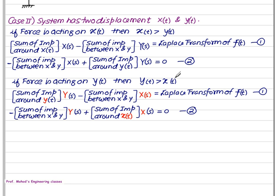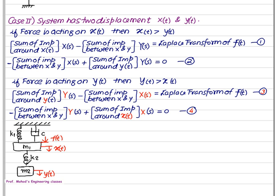When the force is applied on y(t), then y(t) is greater than x(t), so the first variable becomes Y(s) and the second is X(s). When writing these matrices, you must first check where the force is acting — on x(t) or y(t). If on x(t), first variable is X(s) and second is Y(s); if on y(t), first variable is Y(s) and second is X(s).